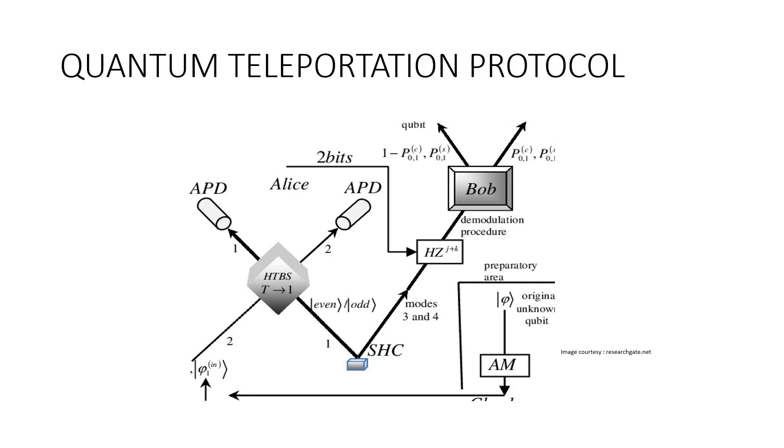An EPR pair, meaning Einstein-Podolsky-Rosen pair, is a pair of qubits or quantum bits that are in a bell state together. The bell states, a concept in quantum information science, are specific quantum states of two qubits that represent the simplest examples of quantum entanglement. The bell states are a form of entangled and normalized basis vectors.